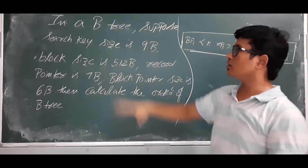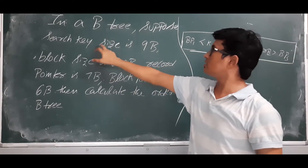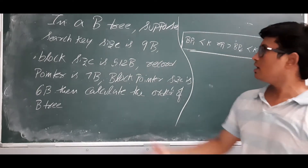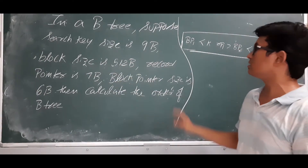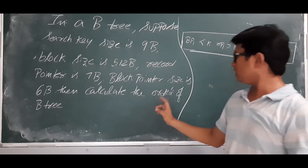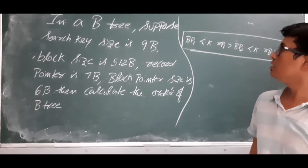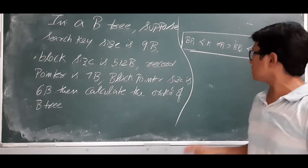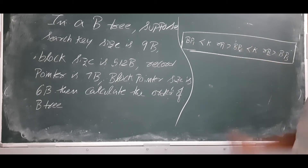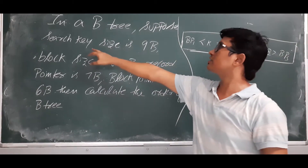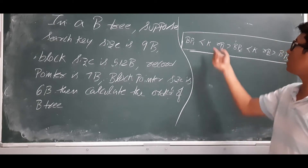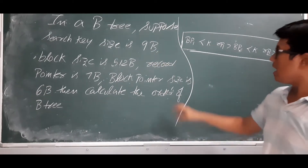First, let me read the question. In a B-tree, suppose the search key size is 9 bytes, the block size is 512 bytes, the record pointer size is 7 bytes, and the block pointer size is 6 bytes. They are asking us to calculate the order of the B-tree. The block size is the total size of one node or one block, which is 512 bytes. The search key size — the key value — is 9 bytes.